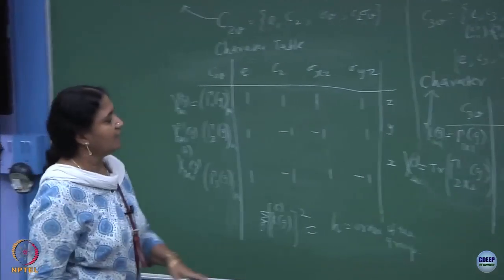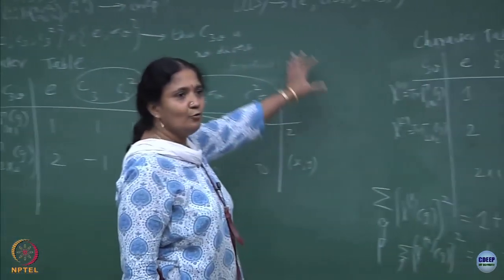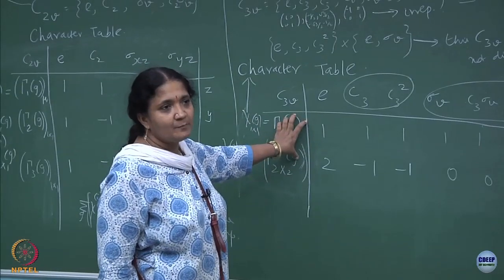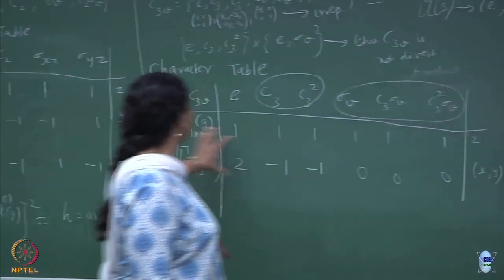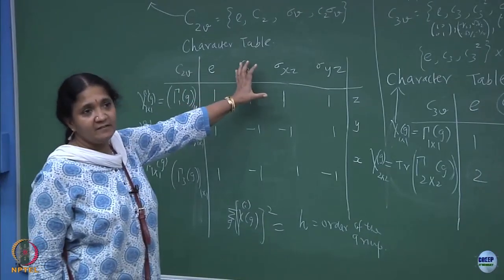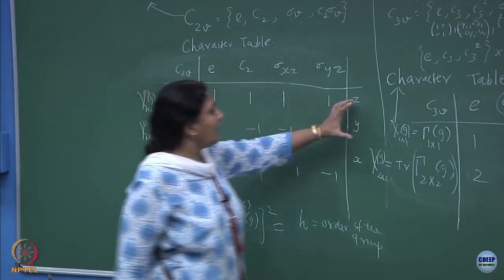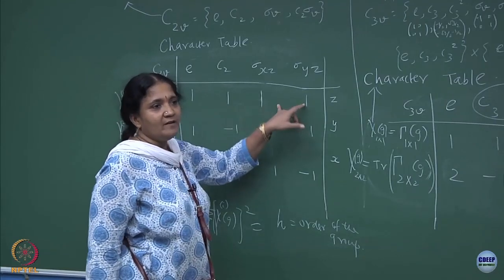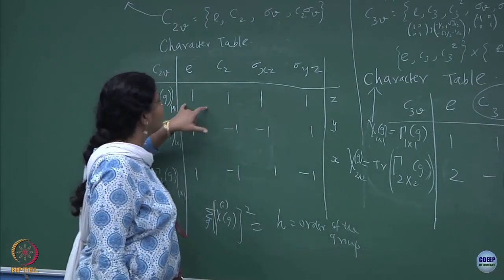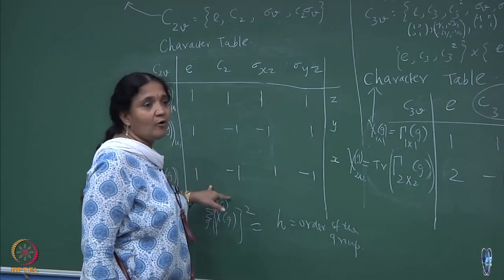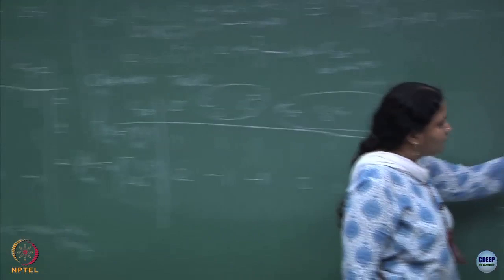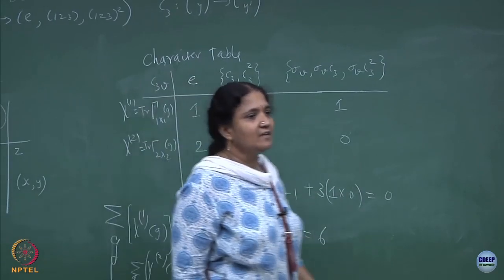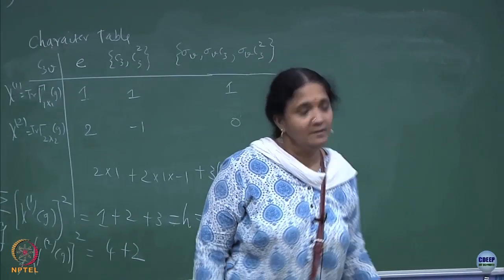To fix the notation: if I use gamma n cross n you know it is a matrix representation; if I write chi you know it is the trace of the matrix representation. From looking at how it operates on the z, x, and y axes I have tried to write the 1 cross 1 irreducible representations. This is a trivial or unit representation; these are non-trivial ones. Similarly for C3v there is a trivial representation but also a non-trivial representation which we are familiar with in day to day life.